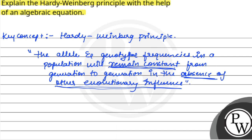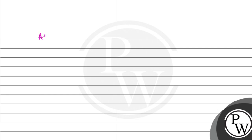In a population of diploid organisms, if the frequency of allele capital A is p, and the frequency of allele small a is q, then the expected genotypic frequency under random mating are as follows.